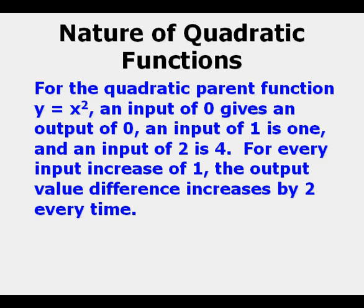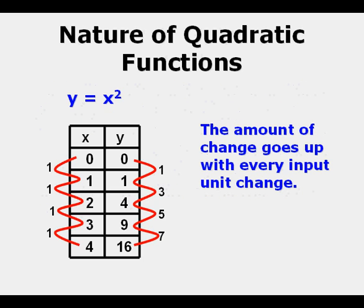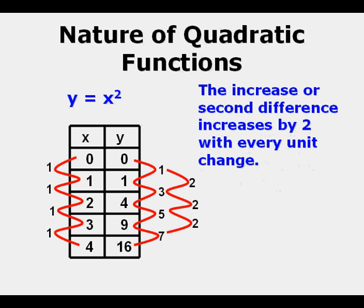For every input increase of 1, the output value difference increases by 2 every time. The amount of change goes up the same amount with every input unit change. The increase or second difference increases by 2 with every unit change.